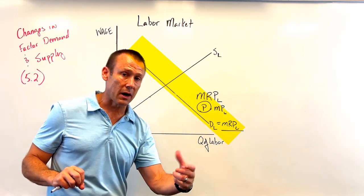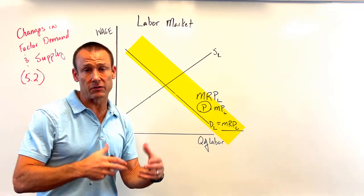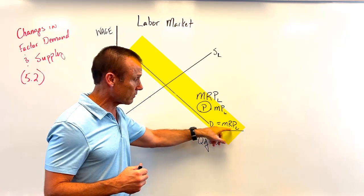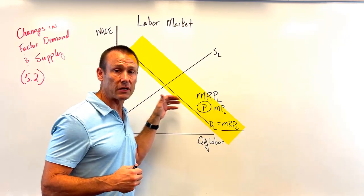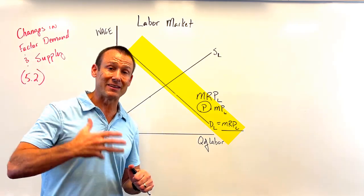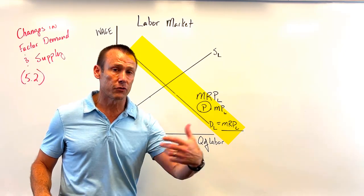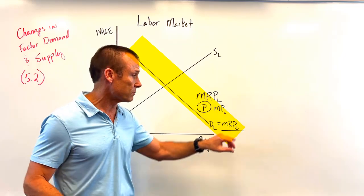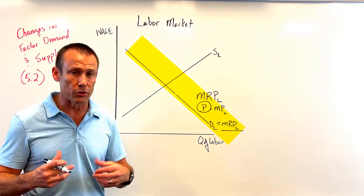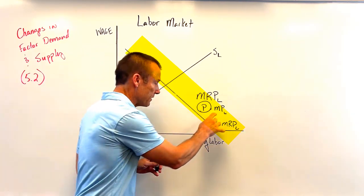Now let's think about the marginal product — the additional products one more laborer can produce. If the marginal product increases, the marginal revenue product line is shifting up, which means demand is shifting right. What would change how much product one more laborer can produce? Changes in technology — production technology — and also changes in the education or human capital of the worker. Those could change the marginal product of the worker.